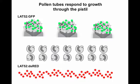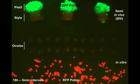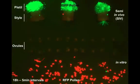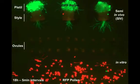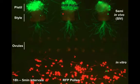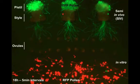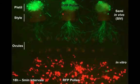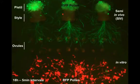Now I'm going to show you a movie of a few hours of pollen tube growth, and I hope you'll appreciate some differences between the red and green pollen tubes. As you can see, the green tubes grow faster and further than the red tubes. You can also see that they enter ovules and burst, leaving bright green dots of pollen tube cytoplasm within the ovule.